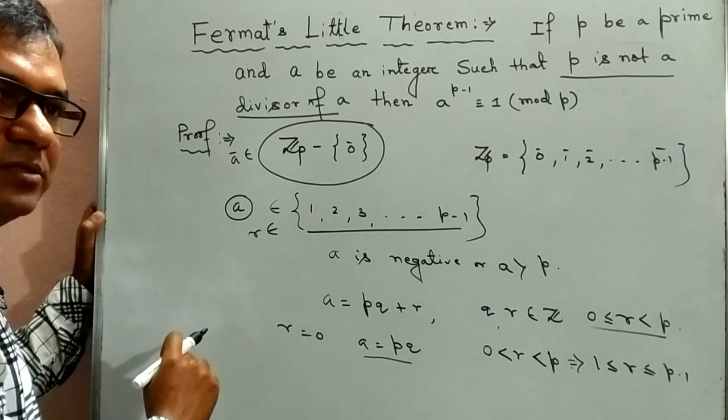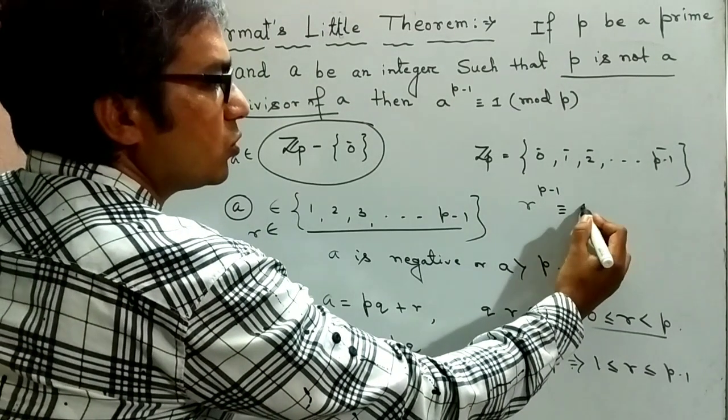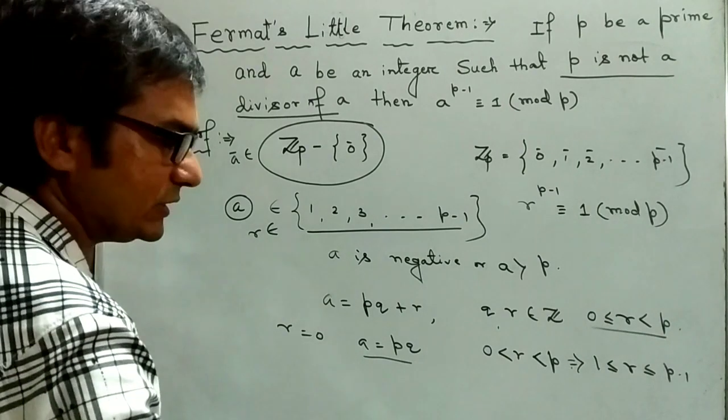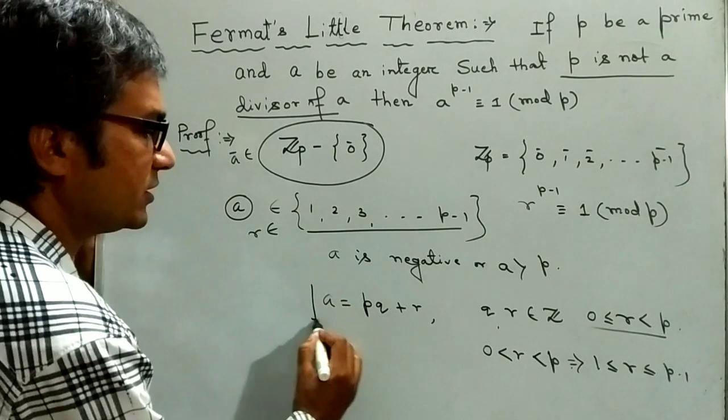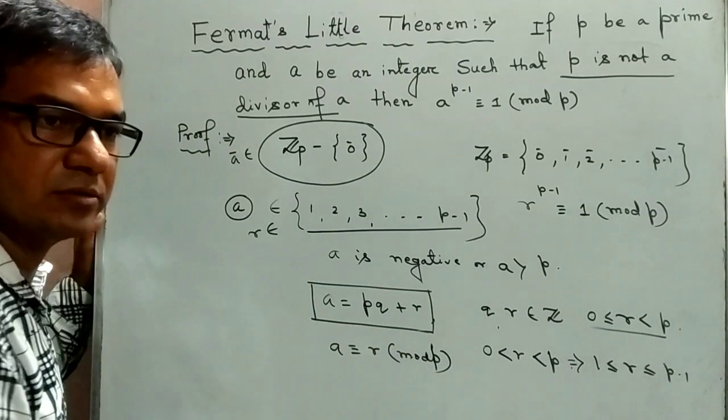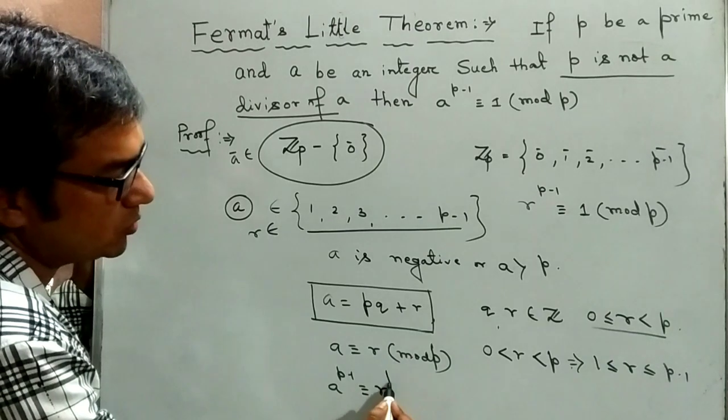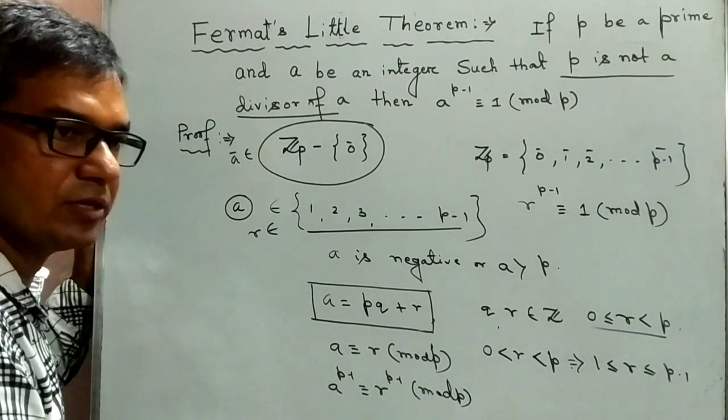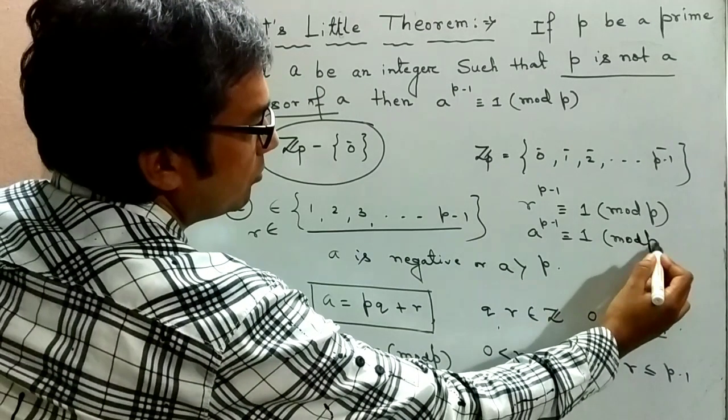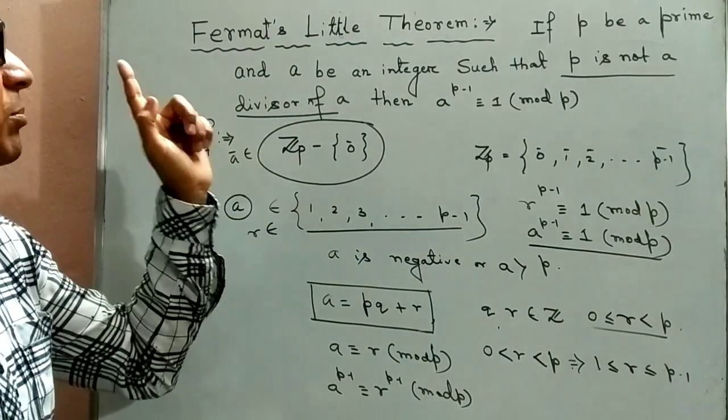So from the first case, we can write r to the power p minus 1 is congruence to 1 mod p. Also, this relation gives a congruence to r mod p. That is, from the theorem of congruence, r to the power p minus 1 equals a to the power p minus 1. That is, a to the power p minus 1 congruence to 1 mod p. So this is the complete proof of Fermat's little theorem.